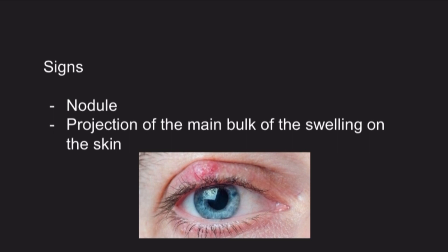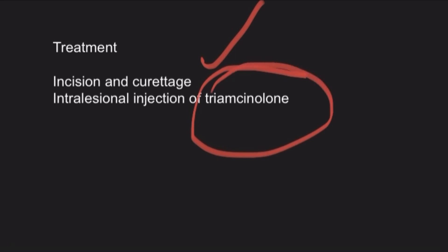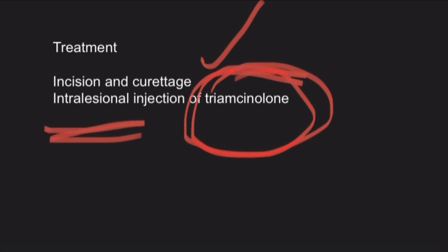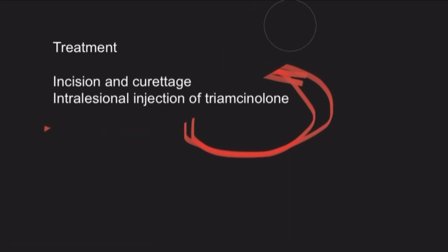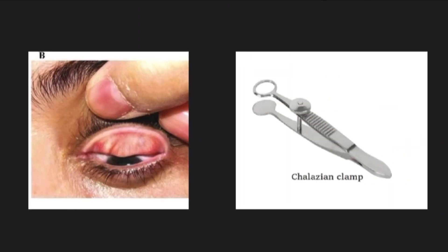The signs of chalazion include a nodule over the lid and also a projection of the skin, as you can see here. Treatment is straightforward: you perform incision and curettage, or give an intralesional injection of triamcinolone, which is a steroid.